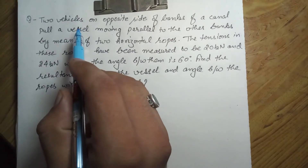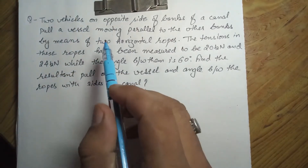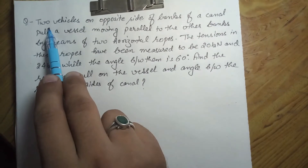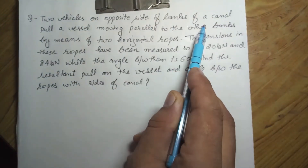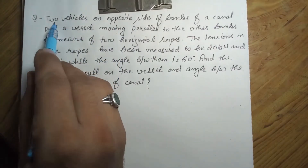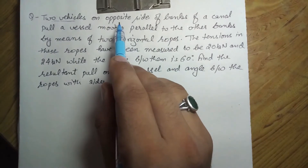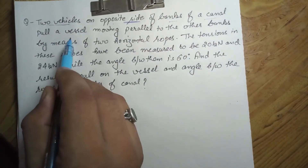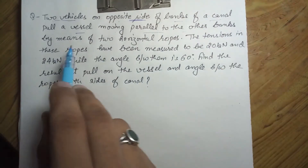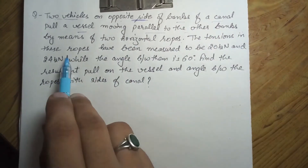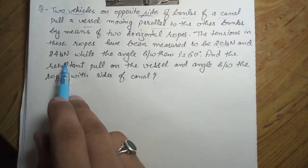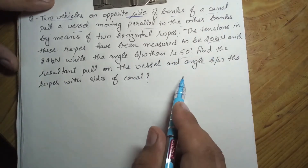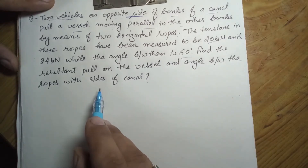Hello students. We will see how to solve this problem from your first unit. The statement is: two vehicles on opposite sides of the banks of a canal pull a vessel moving parallel to the other bank by means of two horizontal ropes. The tension in the ropes is 20 kilonewton and 24 kilonewton, while the angle between them is 60 degrees.